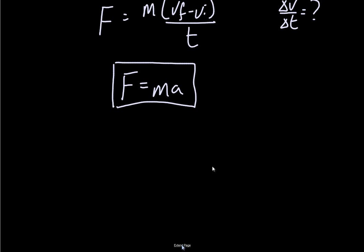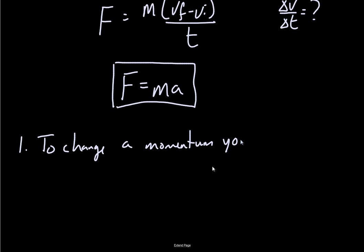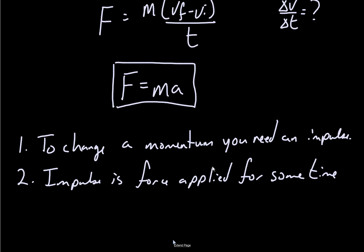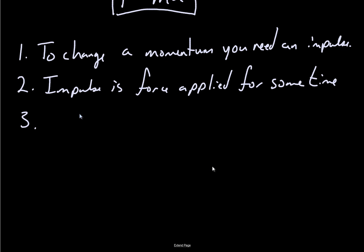What takeaways do I want you to get from this? One: to change a momentum, you need an impulse. Two: impulse is force applied for some time. And three, if we want that in terms of an equation — there are numerous ways to write it, but probably the one you'll end up using the most is this: F times t equals m times delta-v.